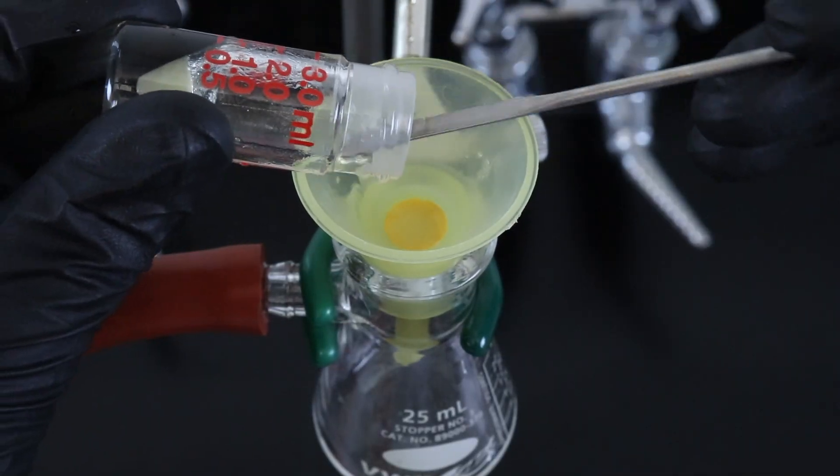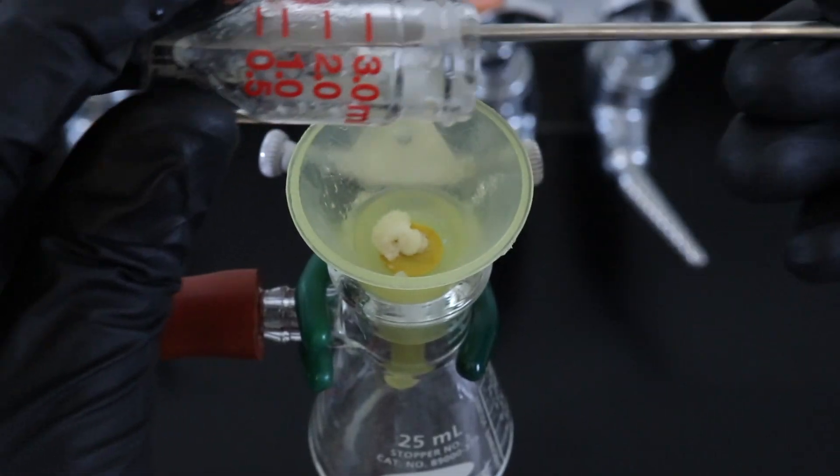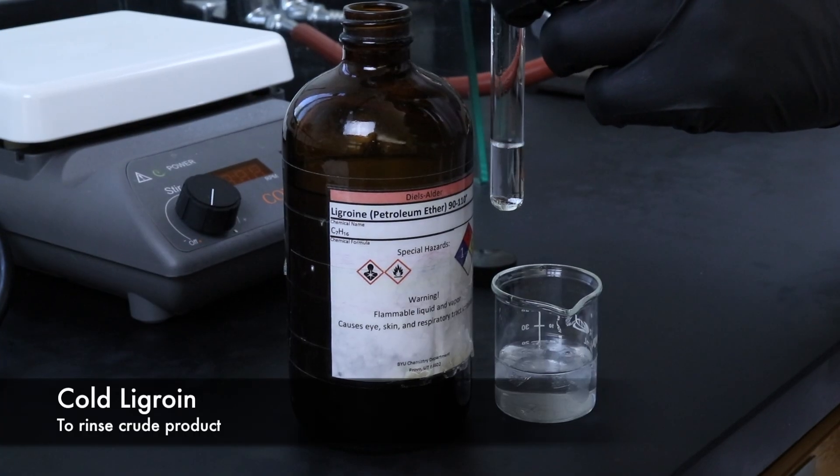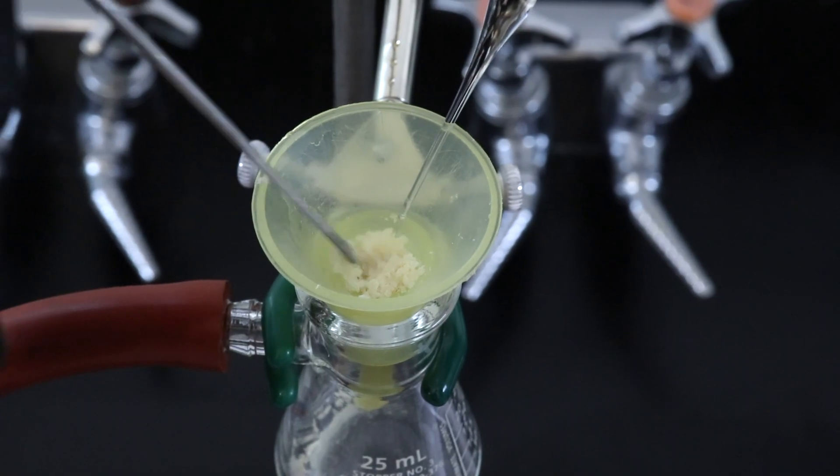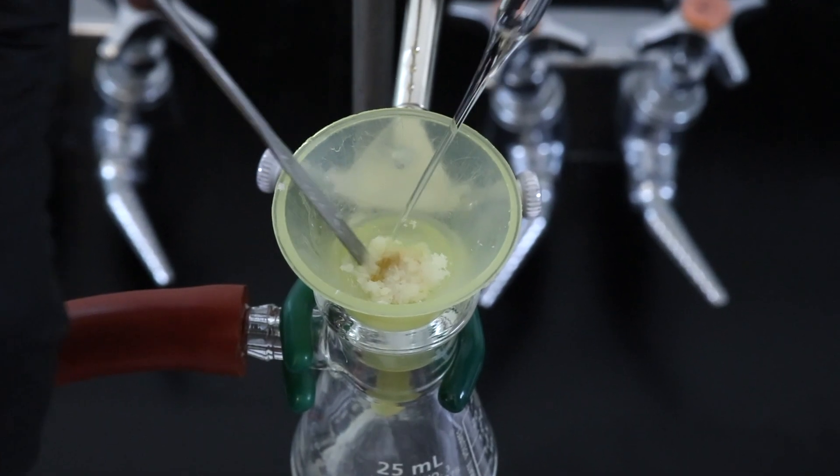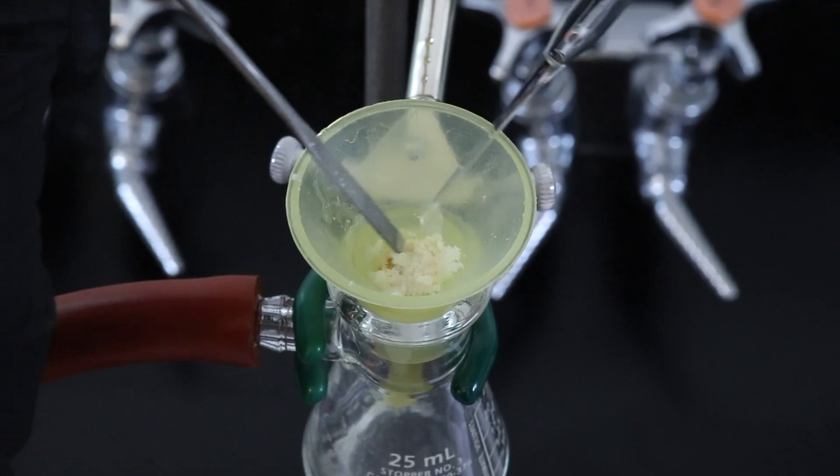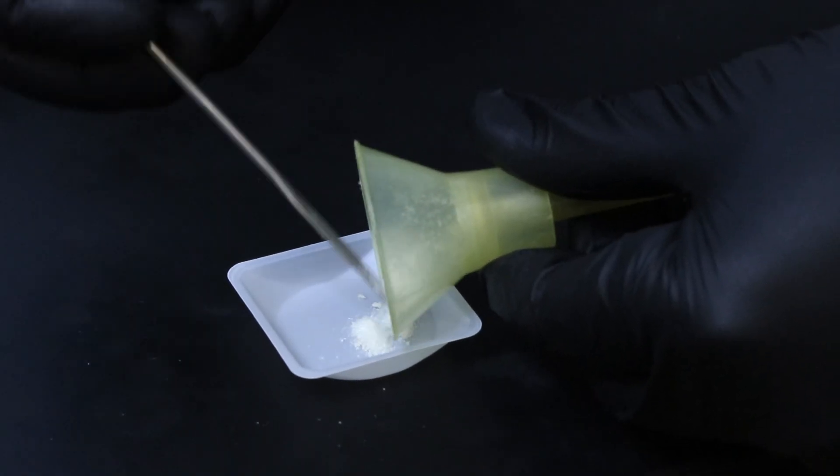Then the crystals can be isolated using a Hirsch funnel and vacuum filtration. Then I'll be using some cold ligroin to rinse the contents of the conical vial and also rinse the product on the Hirsch funnel. And I'll go ahead and rinse it a couple times.